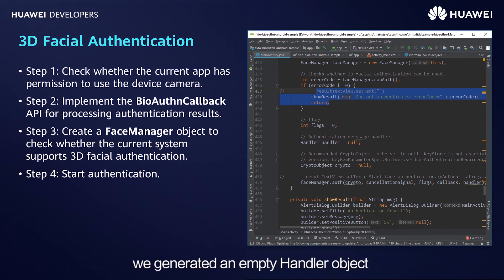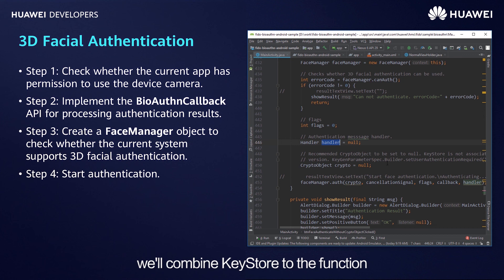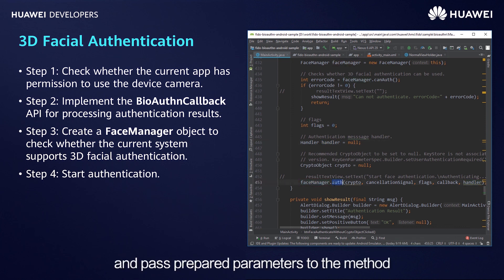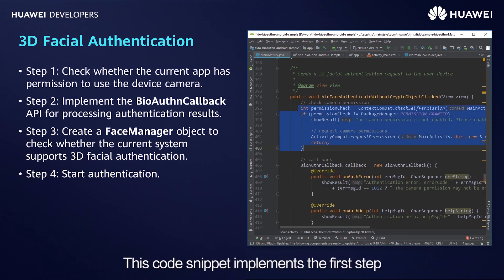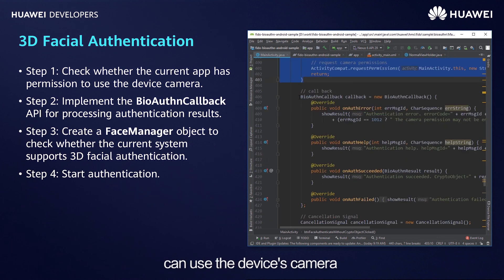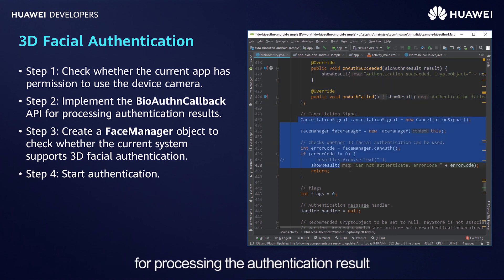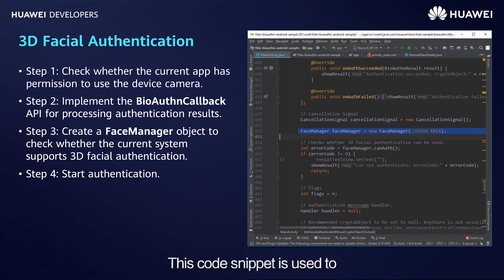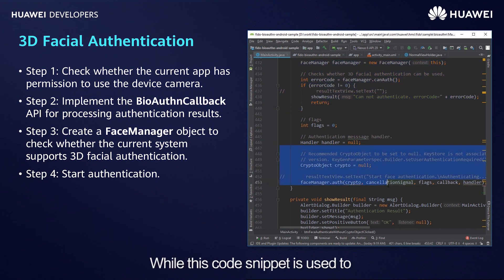An empty handler object and empty encryption object are generated at this stage, as KeyStore is not combined with this function in the current version and will be added in a later version. Finally, call the auth method of the FaceManager object and pass the prepared parameters including the callback object to enable authentication. To summarize: the first code snippet checks camera permission; the second implements the BioAuthnCallback API; the third checks 3D facial authentication support; and the fourth enables authentication.